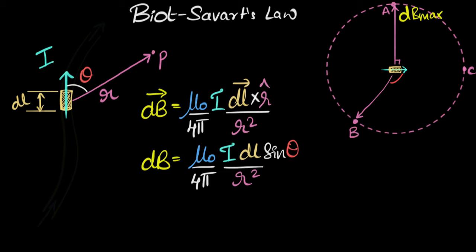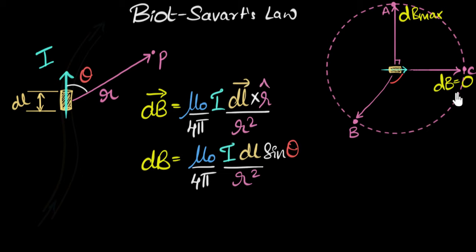What about the point directly along the wire? Drawing r from the element to that point, the angle is zero. Sine(0°) = 0, so dB is zero there. Even though we're at the same distance, the magnetic field is not the same everywhere — it not only depends on the distance, it also depends on the angle.